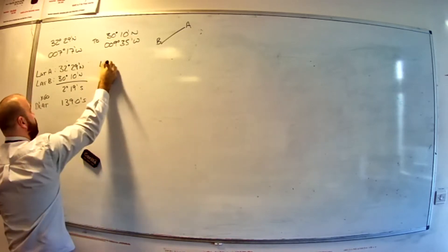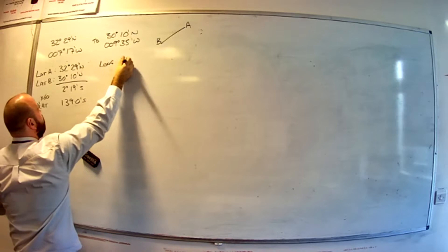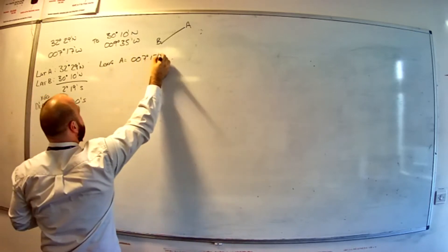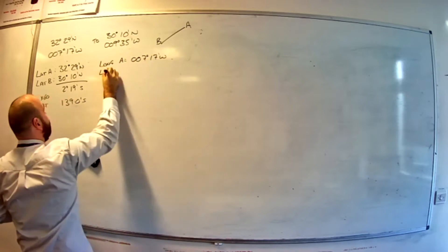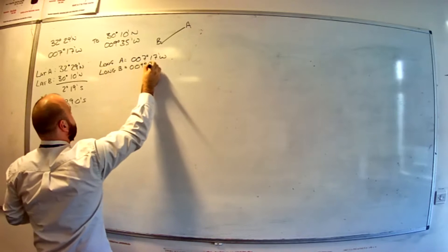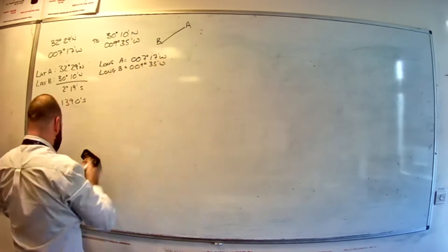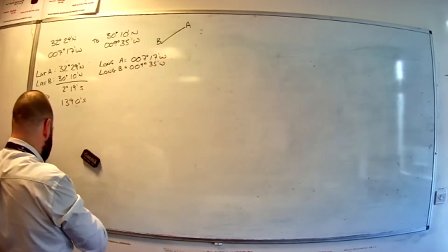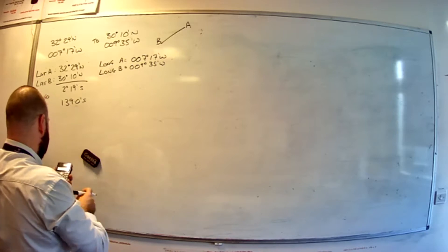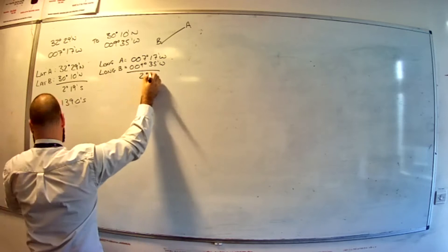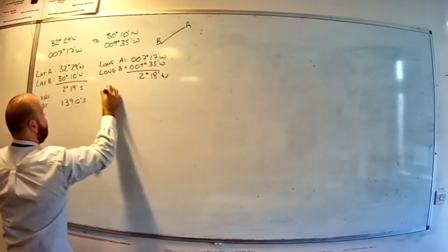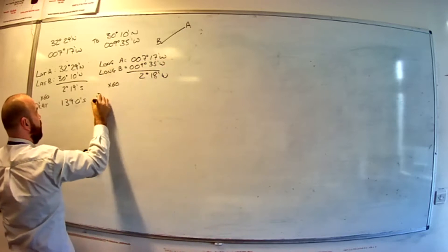So the longitude of A was 007 degrees 17 minutes west. Longitude B was 009 degrees 35 minutes west. 9 degrees 35 minutes minus 7 degrees 17 minutes gives us 2 degrees 18 minutes. We were heading more west, so we name it west. Times it by 60 to get DLong.